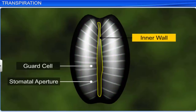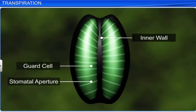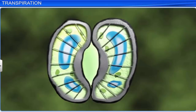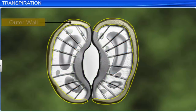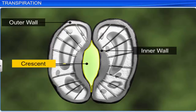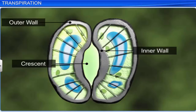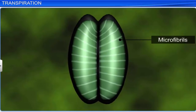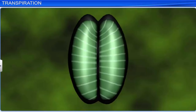The inner wall of each guard cell is thick and elastic. When turgidity inside two guard cells increases, the outer walls bulge and force the inner walls to take the shape of a crescent. The radial orientation of the cellulose microfibrils in the cell wall of the guard cell helps open the stomata. When guard cells lose turgor, they become flaccid, while the elastic inner cell walls regain their original shape, leading to the closure of the stomata.